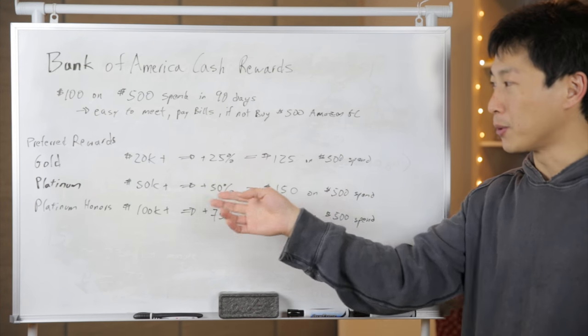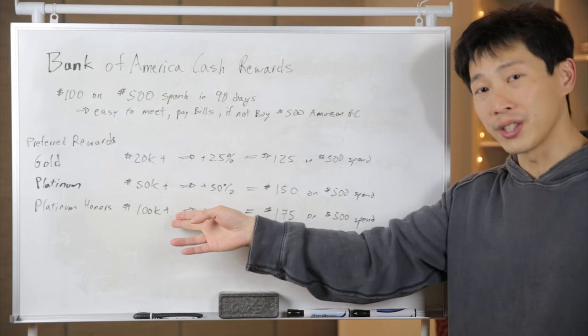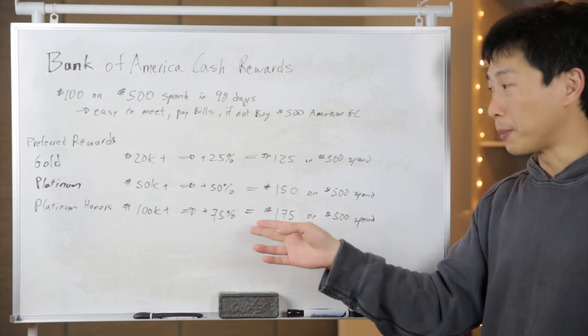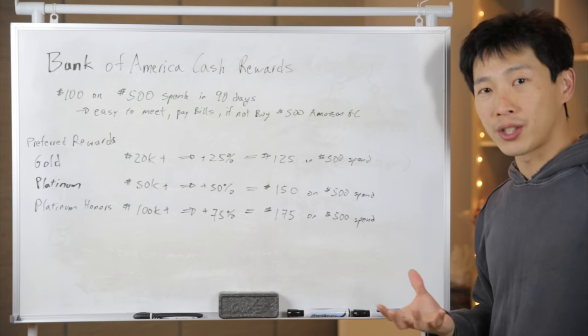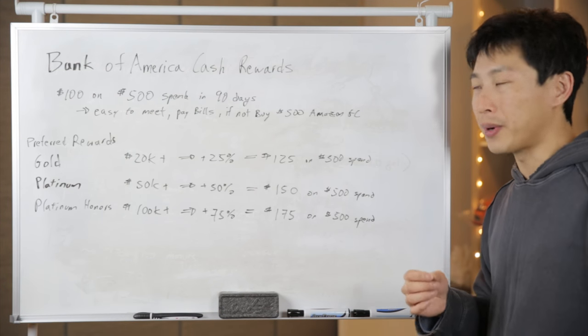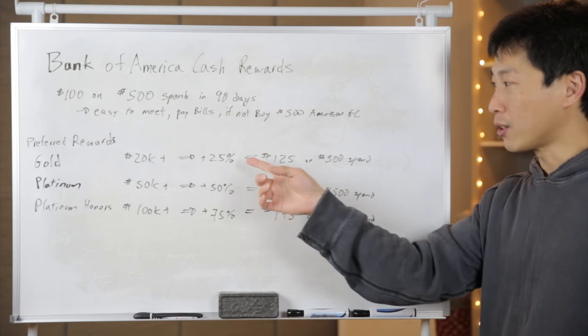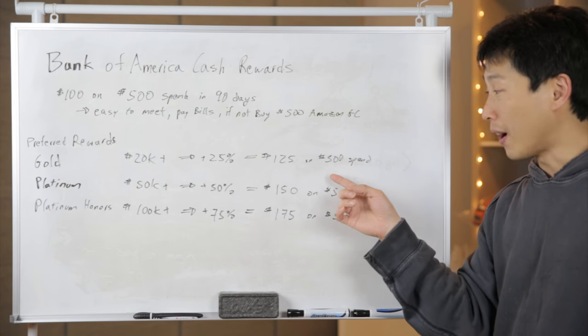If it's over $20k, you'll get a 25% boost. If it's over $50k, you'll get a 50% boost. Now if you have $100k, you're going to get a 75% boost. Once you meet this $500 requirement in 90 days, you're going to get $100 in rewards cash. And if you redeem this into your Bank of America checking account, you're going to get a 25% bonus, which is $125 on that $500 spend.